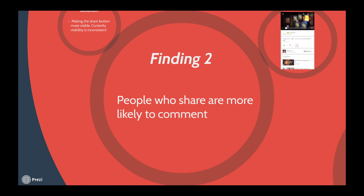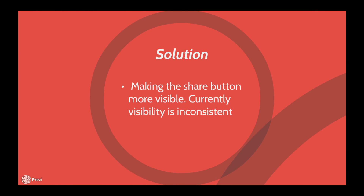Our second finding is that people who share videos are more likely to comment. We discovered this during our surveys through cross-tabulation. Our solution for this is to make the share button more visible. Currently, visibility is inconsistent, which was noted in our comparative analysis and heuristic evaluation and confirmed in usability testing. Our recommendation is to include the share button down by the like and dislike buttons, as this area already contains more social-related features.